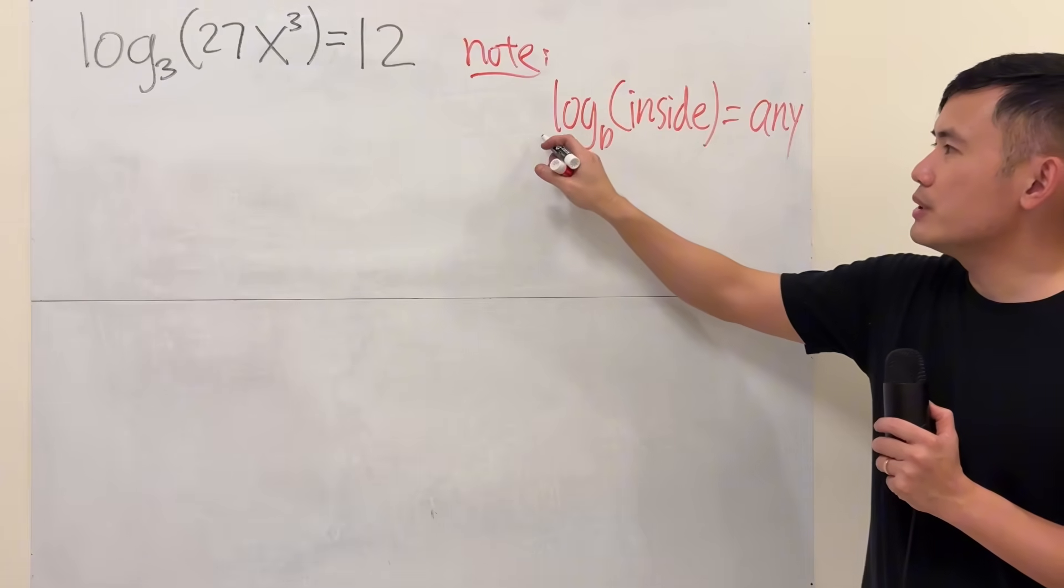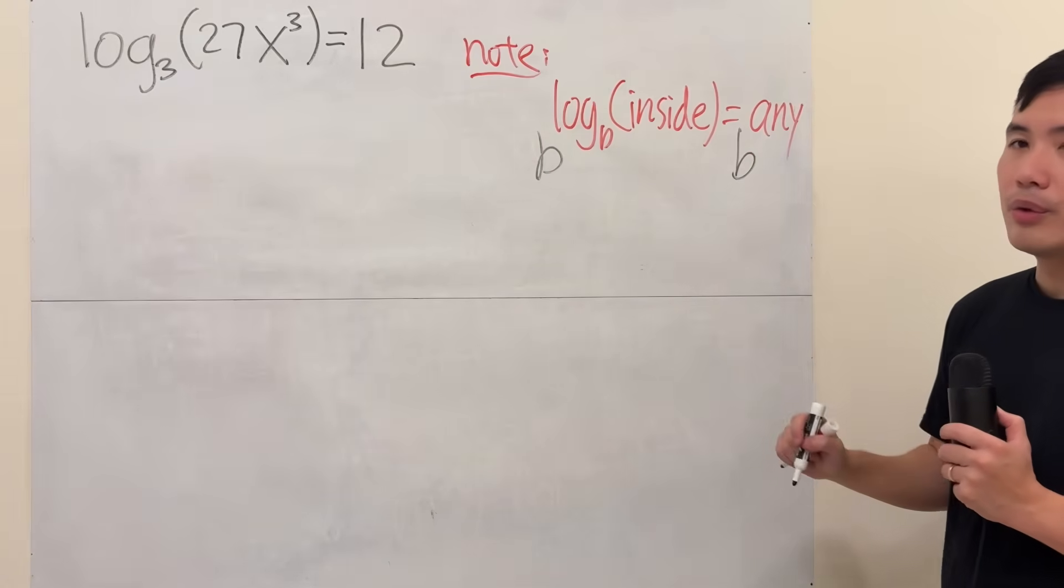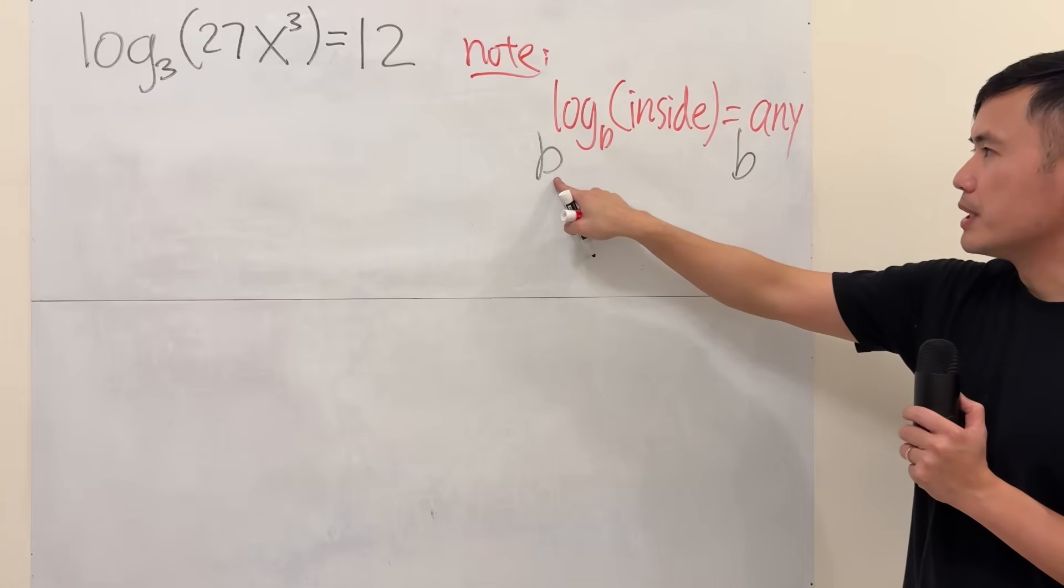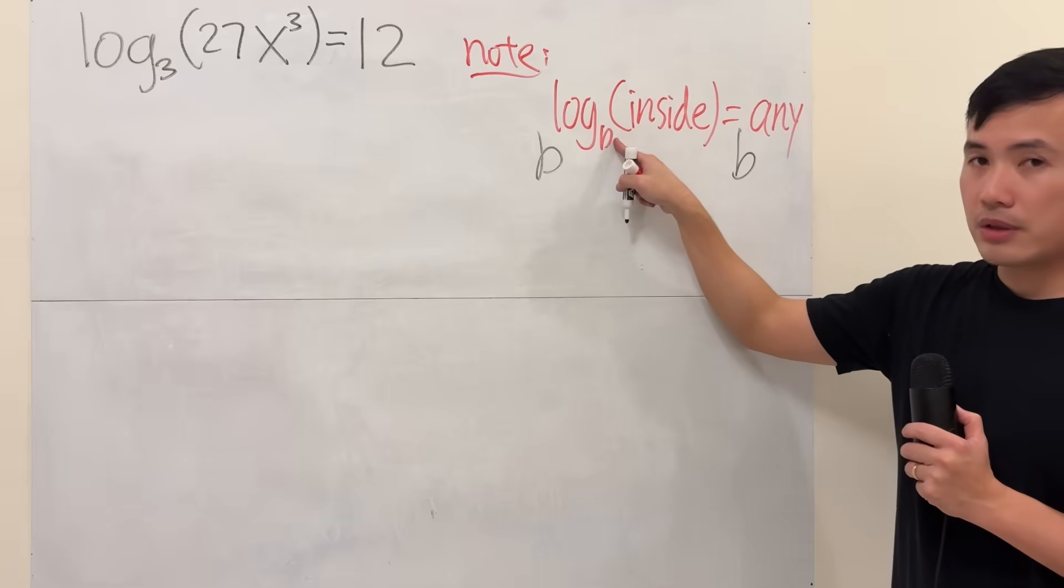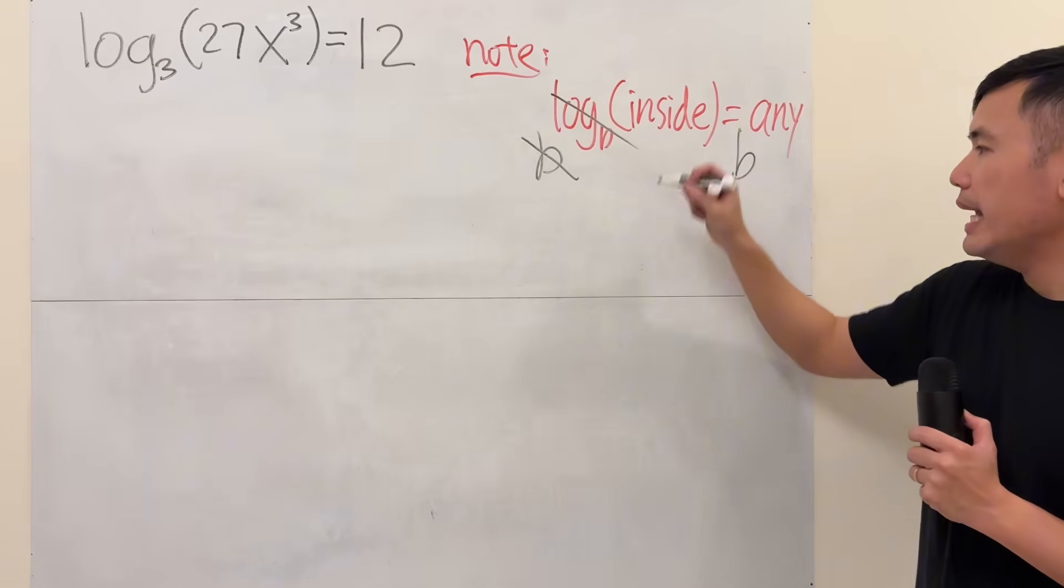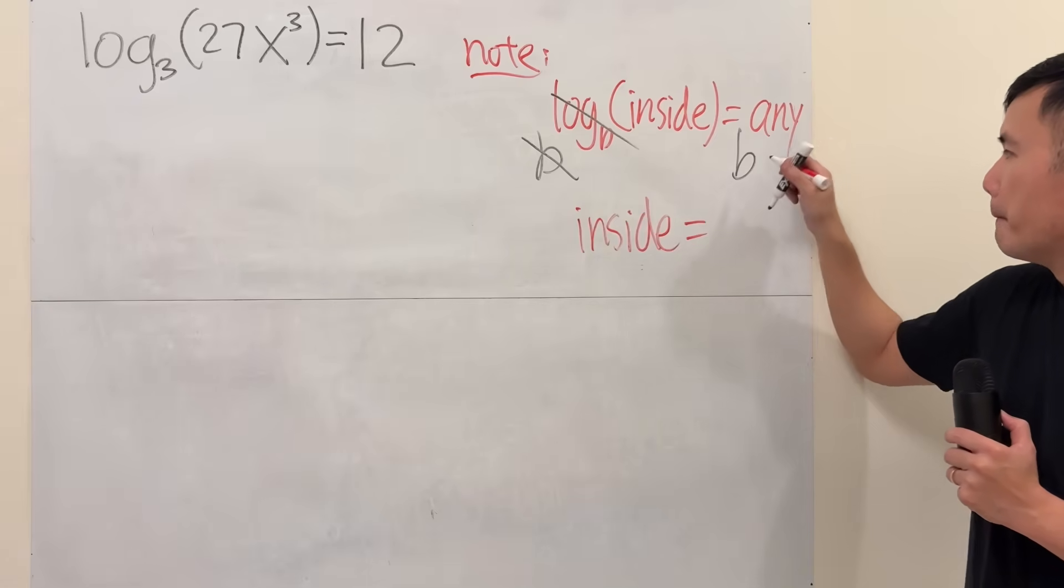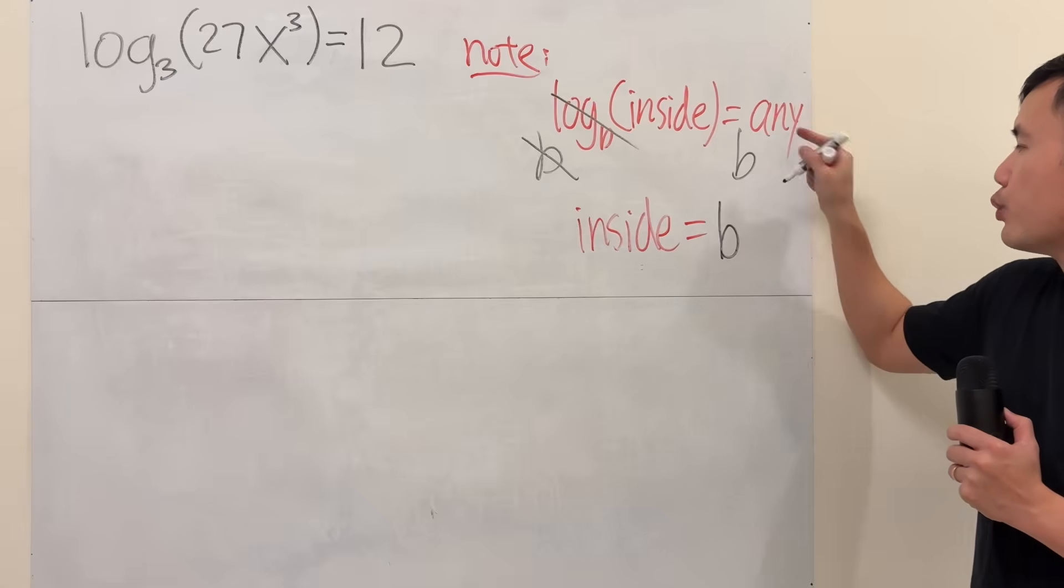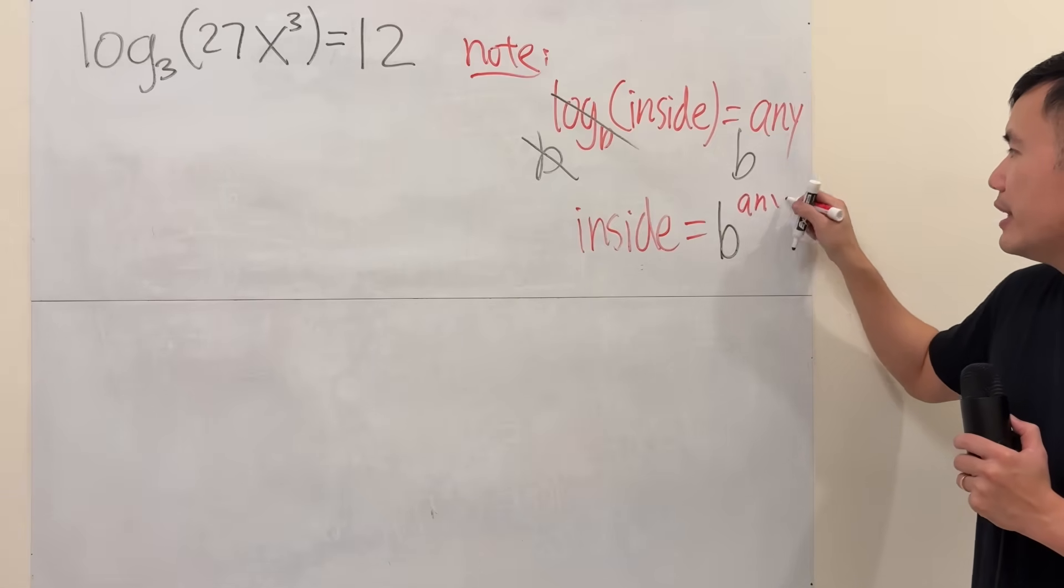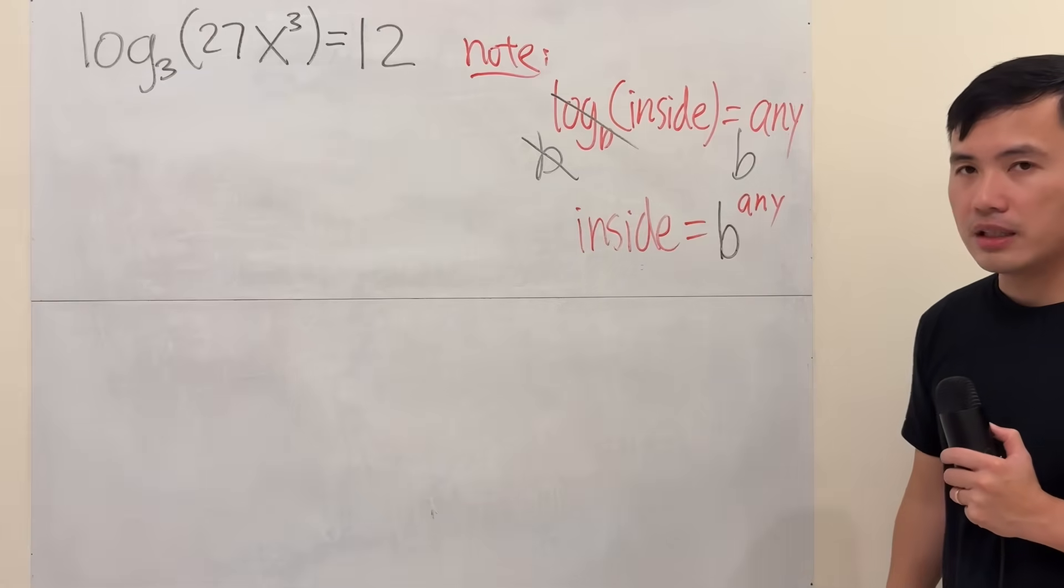When you have this, what you do is, you do b to this power, and you do b to that power. The reason is because that's the base for the logarithm. And the deal is that this and that will cancel, and you will just get inside being equal to b raised to whatever that power is. And then you just continue to do the usual thing, because you don't have the log anymore.